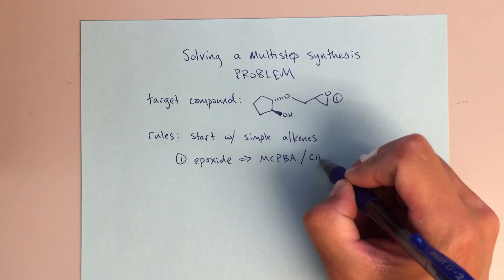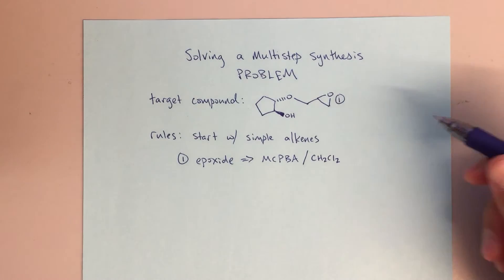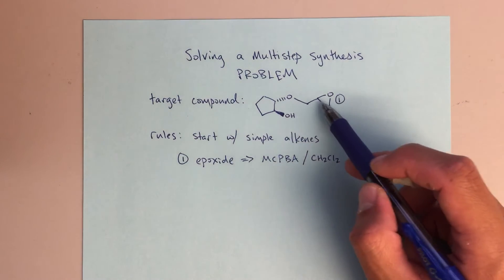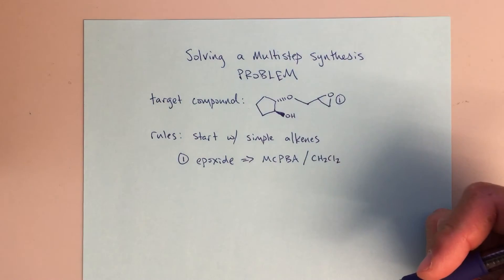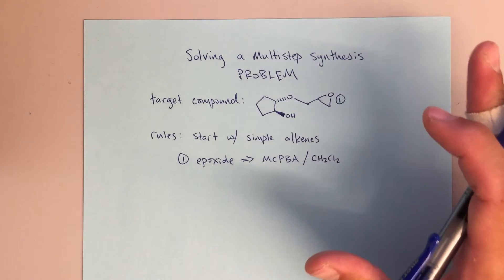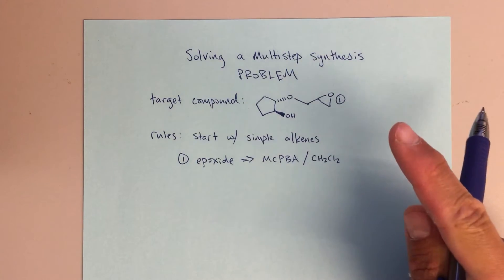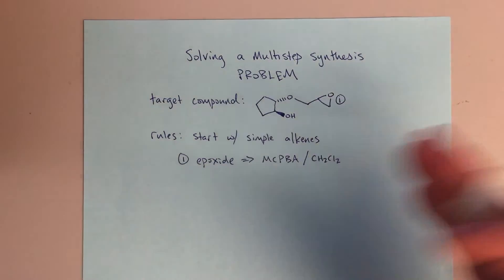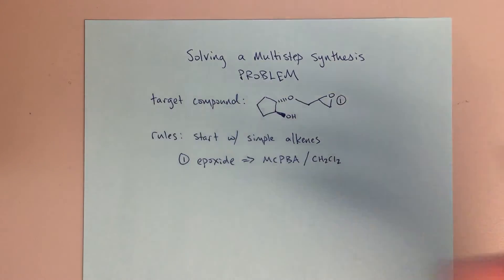So maybe we'll write MCPBA CH2Cl2, dichloromethane, which is a pretty reasonable way to form that epoxide. Here I'm looking at this piece, definitely we'll have an alkene here, treat that with MCPBA, that gets me to my epoxide. So that's step one. And remember, my mom's advice: do one thing at a time.